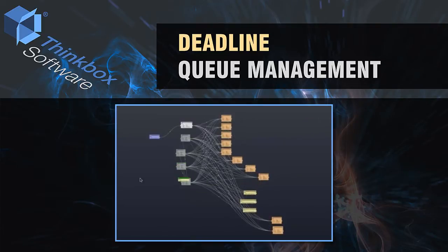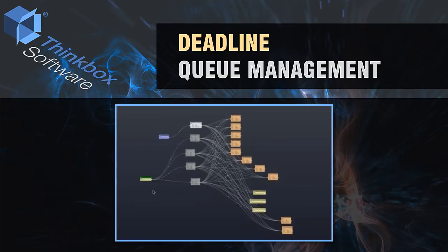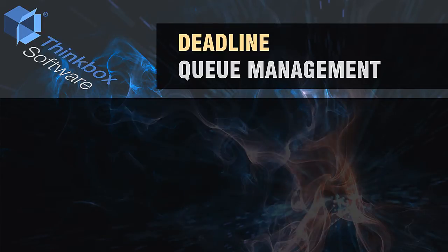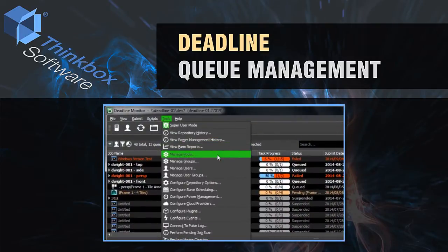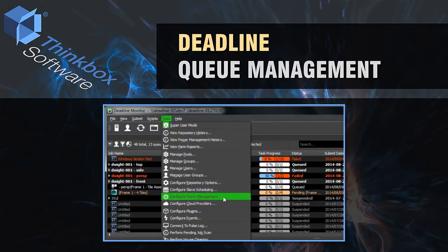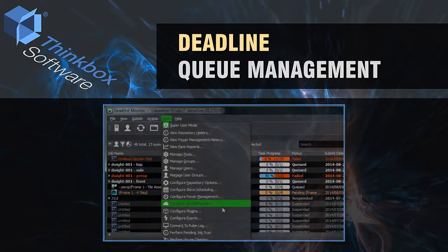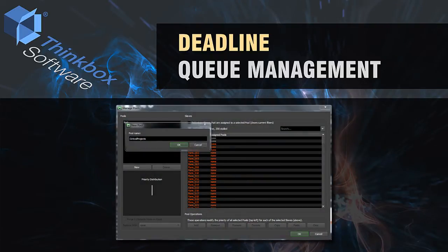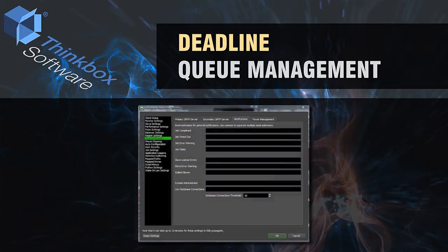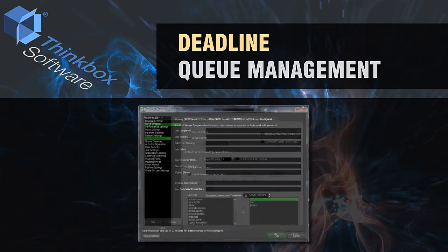Dependencies can also be controlled programmatically through the Deadline API, enabling the creation of sophisticated content processing pipelines. The monitor is also the window into overall configuration settings, including which slaves can process which types of jobs, as well as repository settings such as user notifications. Deadline features an extensive user permission system, which allows administrators to control which features of Deadline are available to users and groups of users.